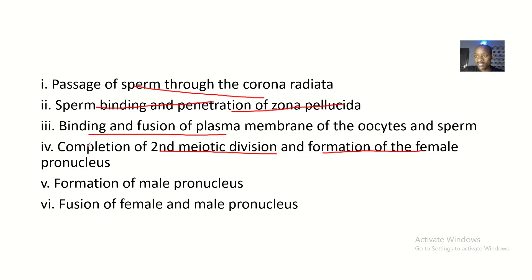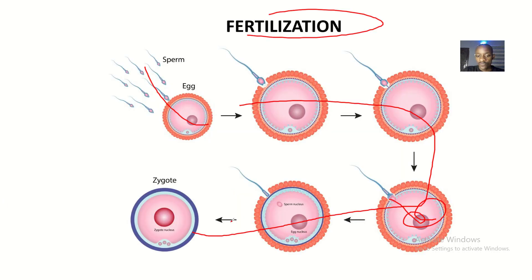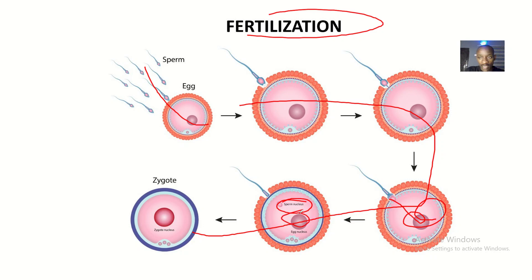Next there is formation of the male pronucleus. The male pronucleus is basically the enlargement of the head of the sperm once it comes to lie close to the egg.